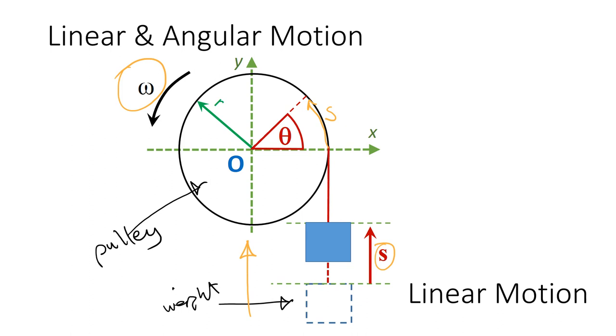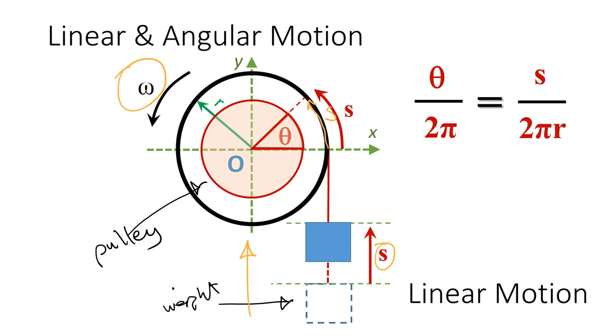Our objective is to establish an equation that relates theta with s. Based on the principle of proportionality, theta over the entire angular displacement, which is equal to 2π, must be equal to the linear displacement s over the circumference of the circle.